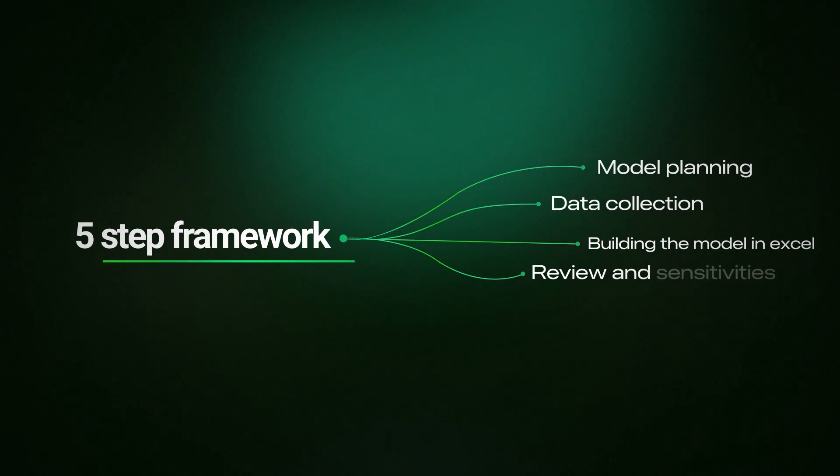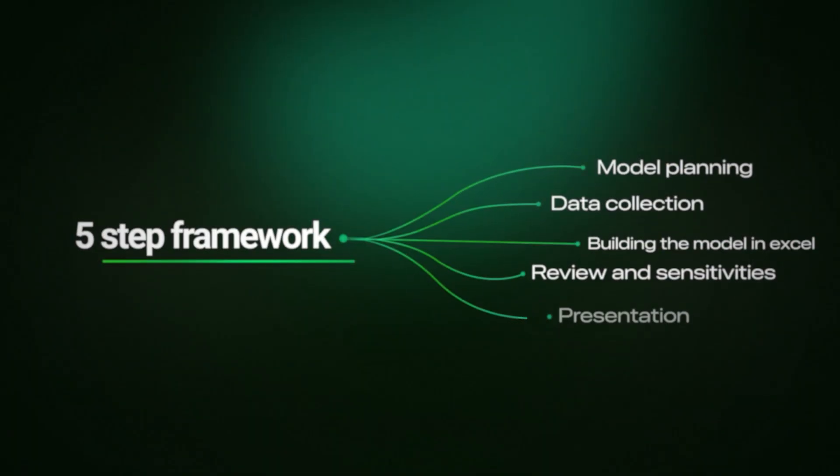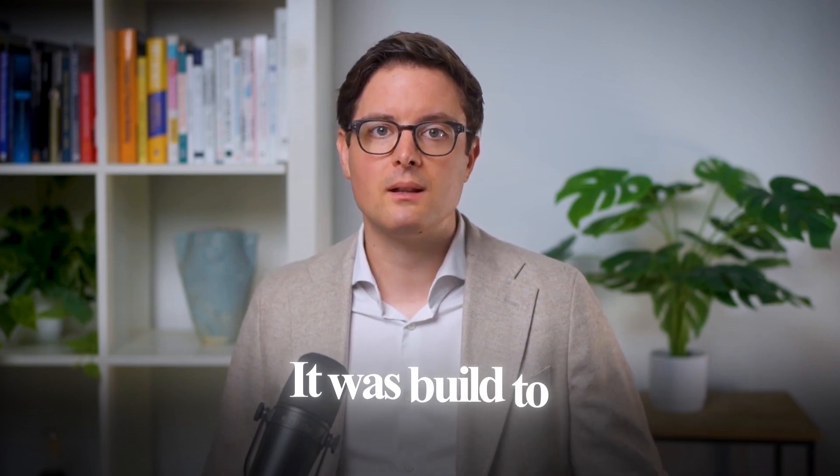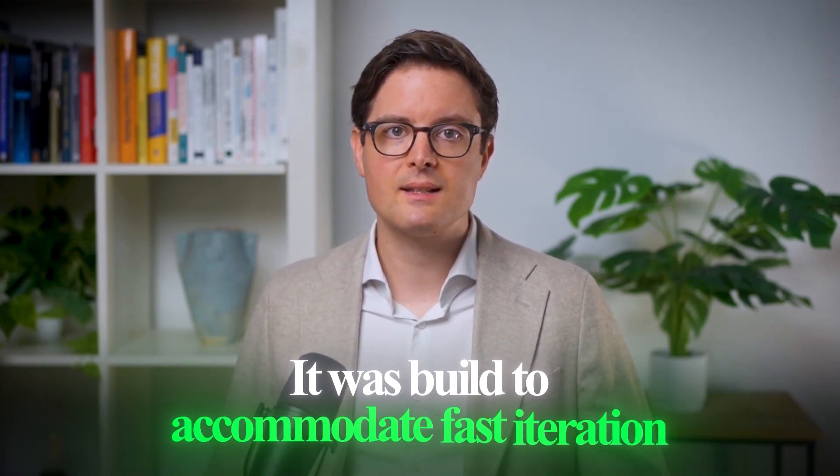Step 4: Review and sensitivities. When you're done building your model, you need to plan time for review and sensitivities. There's nothing worse than presenting output from a complex model and then realizing mid-sentence that you made a mistake you didn't catch. Step 5: Presentation and iteration. Present your findings and be prepared to iterate based on feedback. The model often needs refinement after the initial presentation, so you need to make sure it was built to accommodate fast iteration.